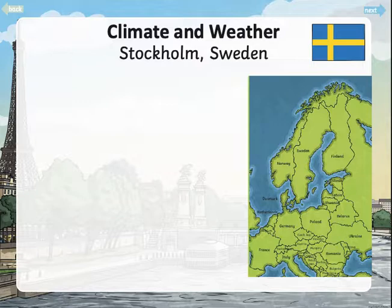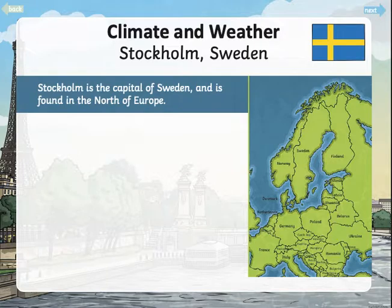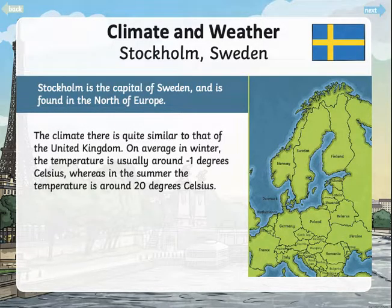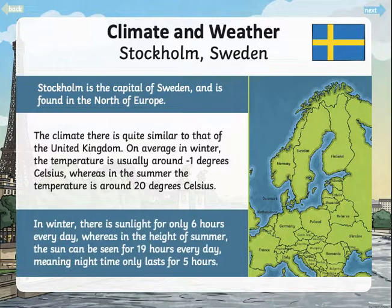We might want to study the climate and weather. Here's Stockholm in Sweden's weather and climate. Stockholm is the capital of Sweden and is found in the north of Europe. The climate there is quite similar to that of the United Kingdom. On average in winter, the temperature is usually around minus one degree Celsius, whereas in summer it's around 20 degrees Celsius. In winter, there is sunlight for only six hours every day, whereas in the height of summer, the sun can be seen for 19 hours every day, meaning night time only lasts five hours.